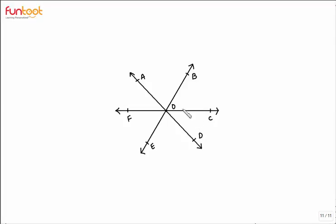One more question: does this pair of angles form vertically opposite angles? No, definitely not — even though they have a common vertex, their opposite arms do not form a straight line. Arm AO and OC do not form a straight line, so this does not qualify as vertically opposite angles.